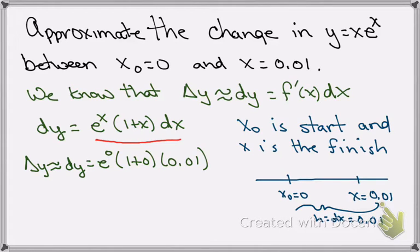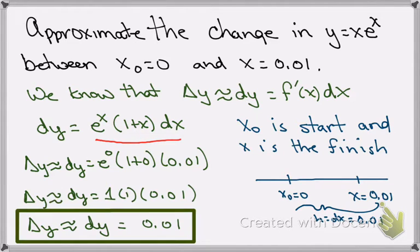So delta y is approximately equal to e to the 0 times 1 plus 0 times 0.01. We simplify and we find that in this particular problem, delta y is approximated by dy, which is 0.01.